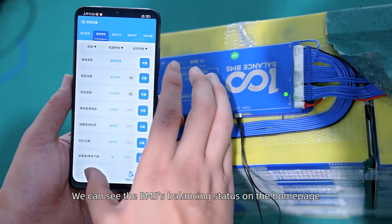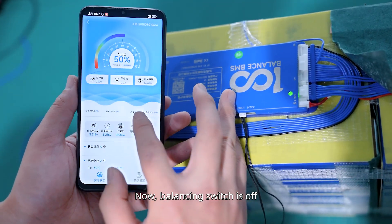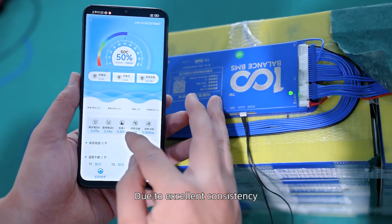We can see the BMS balancing status on the home page. Now balancing switch is off. Due to excellent consistency, it is not necessary to turn it on.